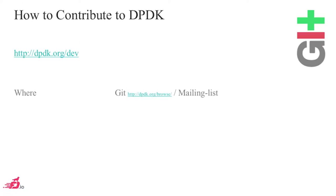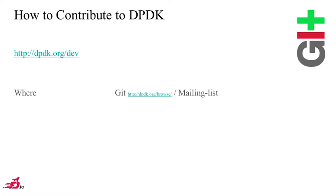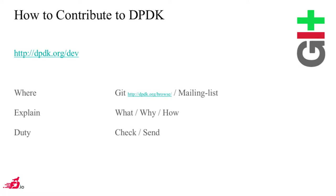We send patches on the mailing list, reviews happen on the mailing list, discussions happen there, and when patches are ready they are pushed to the git repository. The mailing list is really used to discuss patches but also for more general discussions. It's really important to bring the right attention to your patch in order to get the right reviewers. The title of your patch is important — you have to clearly explain what your patch is doing, why you are doing it, what the bug or improvement is, and how you achieved the feature or fix.